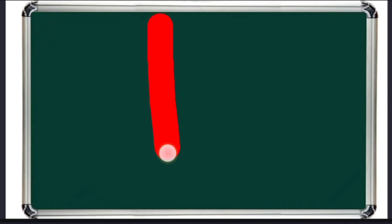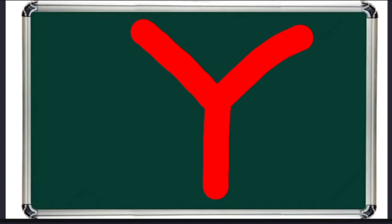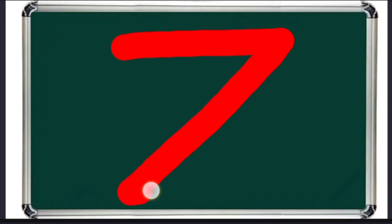V for van. W for watch. X for xylophone. Y for yacht. Z for zebra.